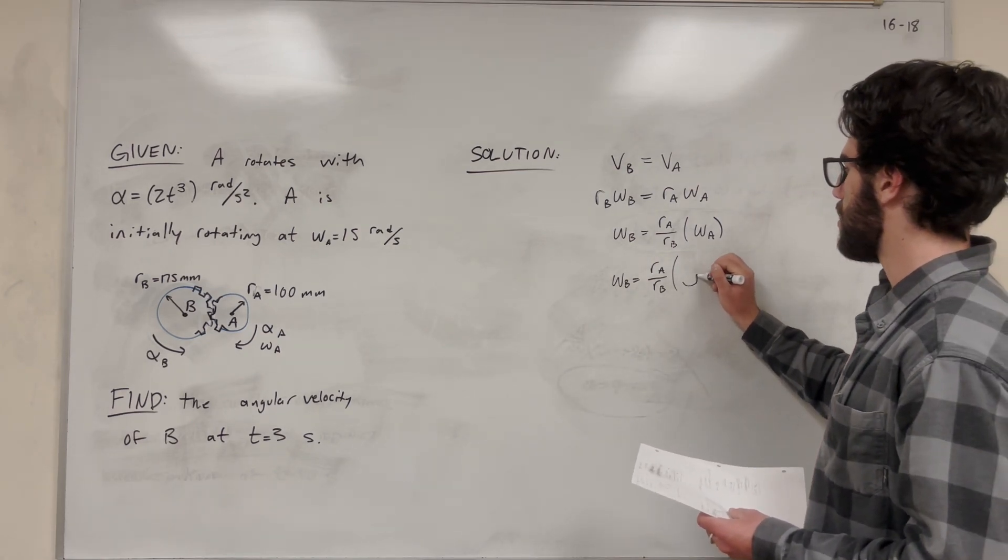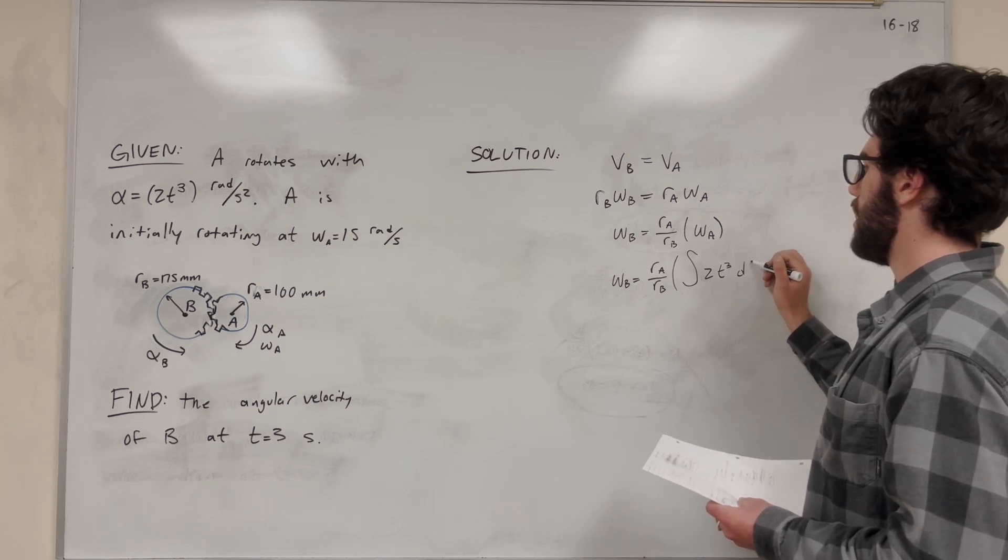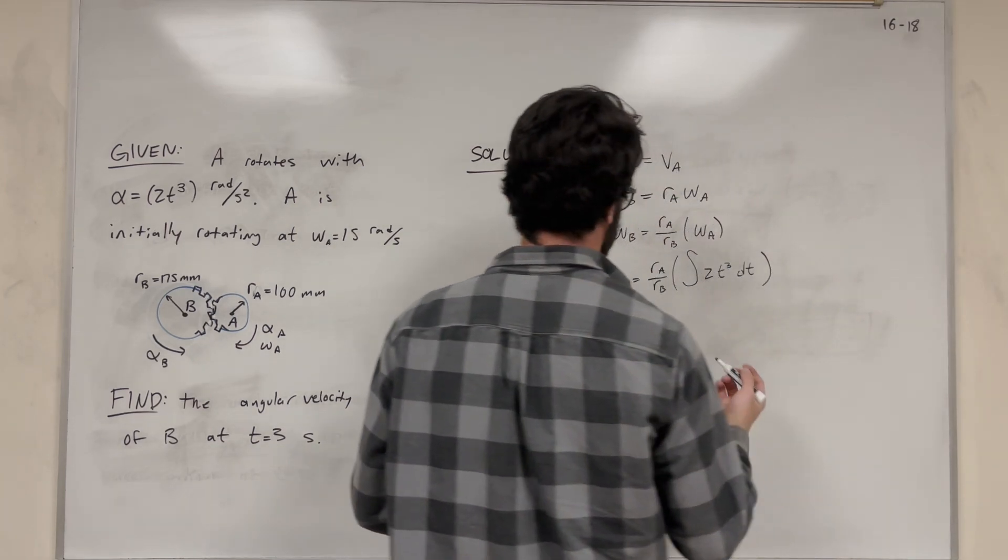Well, angular velocity is the integral of angular acceleration. So if we take the integral of the angular acceleration, which is 2t³, with respect to time, this is going to give us our angular velocity of A.